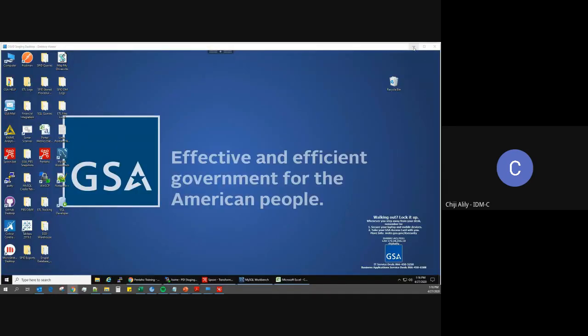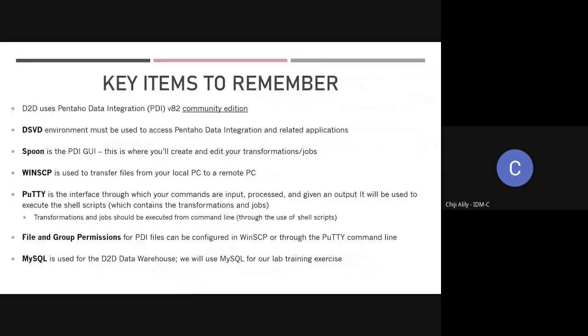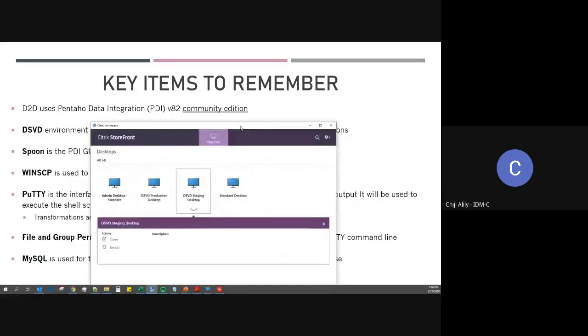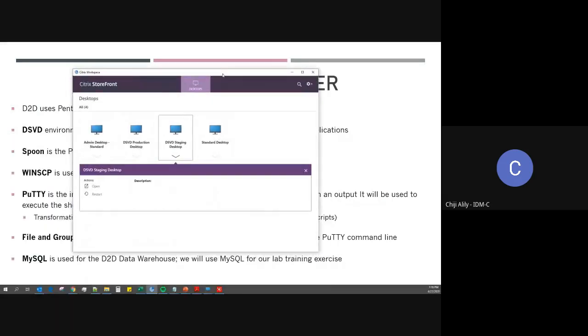The other alternative is through the Citrix desktop application — same thing as the web, just in the desktop format. And again, you can access production or staging from there.